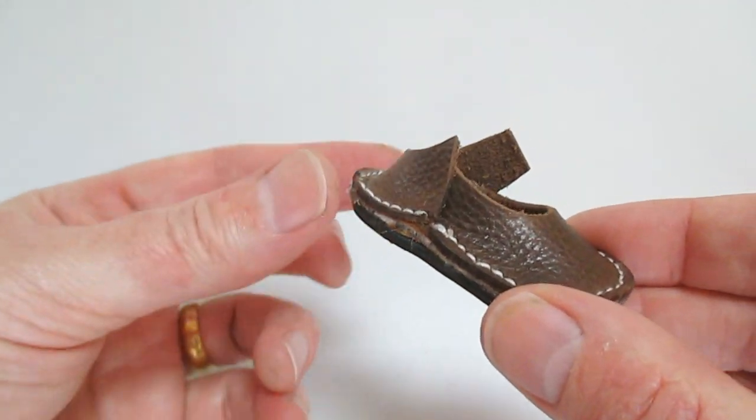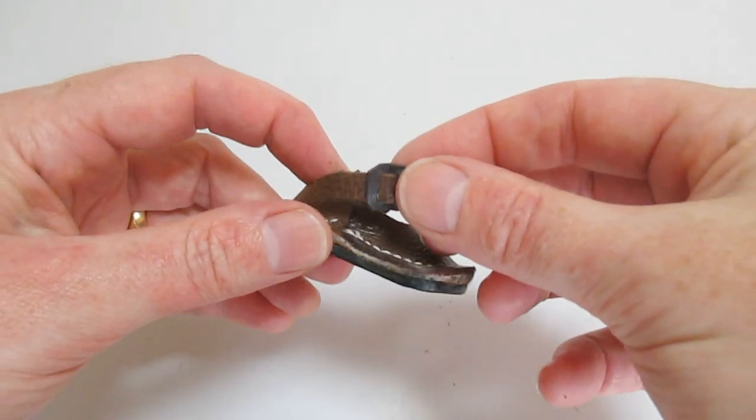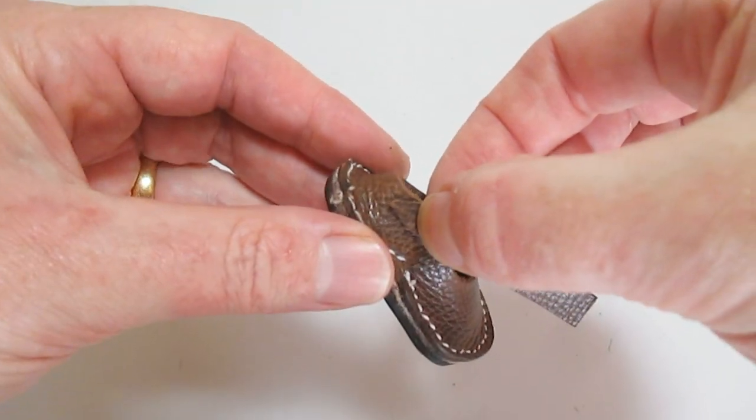Now I can add the strap piece. A bit of glue on the end there. I like to attach it on that side first so that the buckle is just where I want it to be.